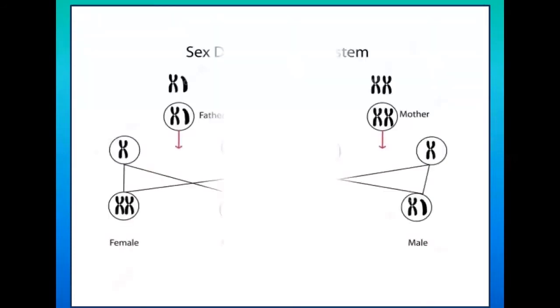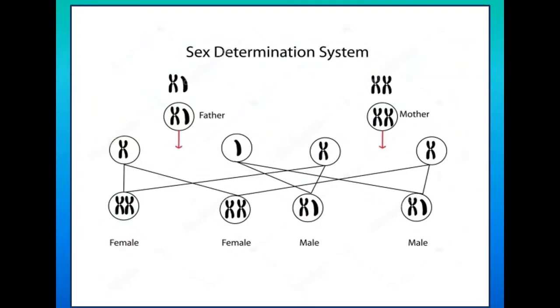Now that we're done differentiating chromosomes found in human males and females, we'll determine the probability of having a male or female offspring. We'll use this illustration, which we call the sex determination system — also known as the chromosomal method — since we're looking at the sex chromosomes XY and XX.